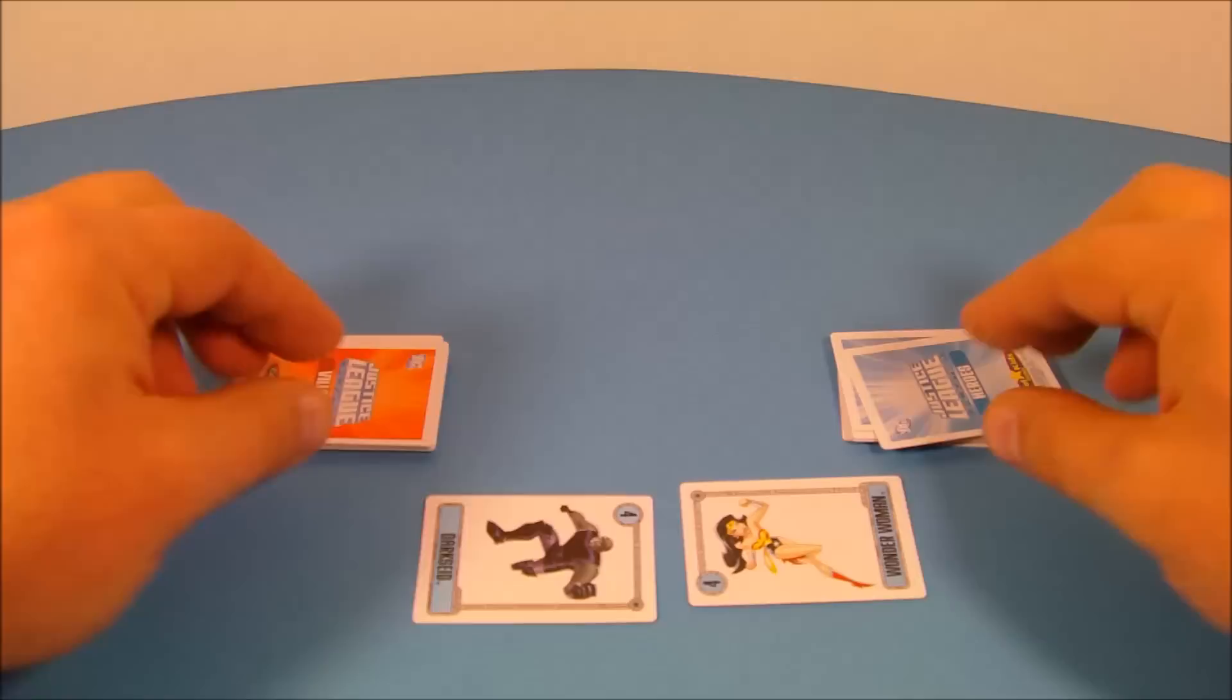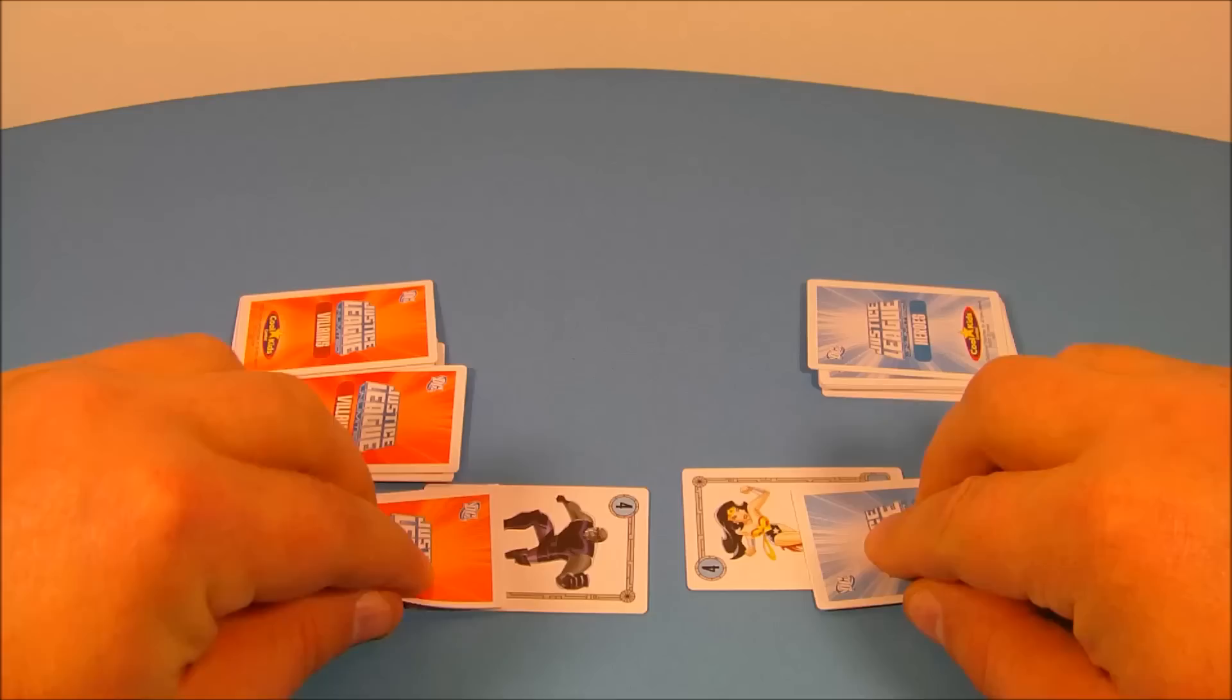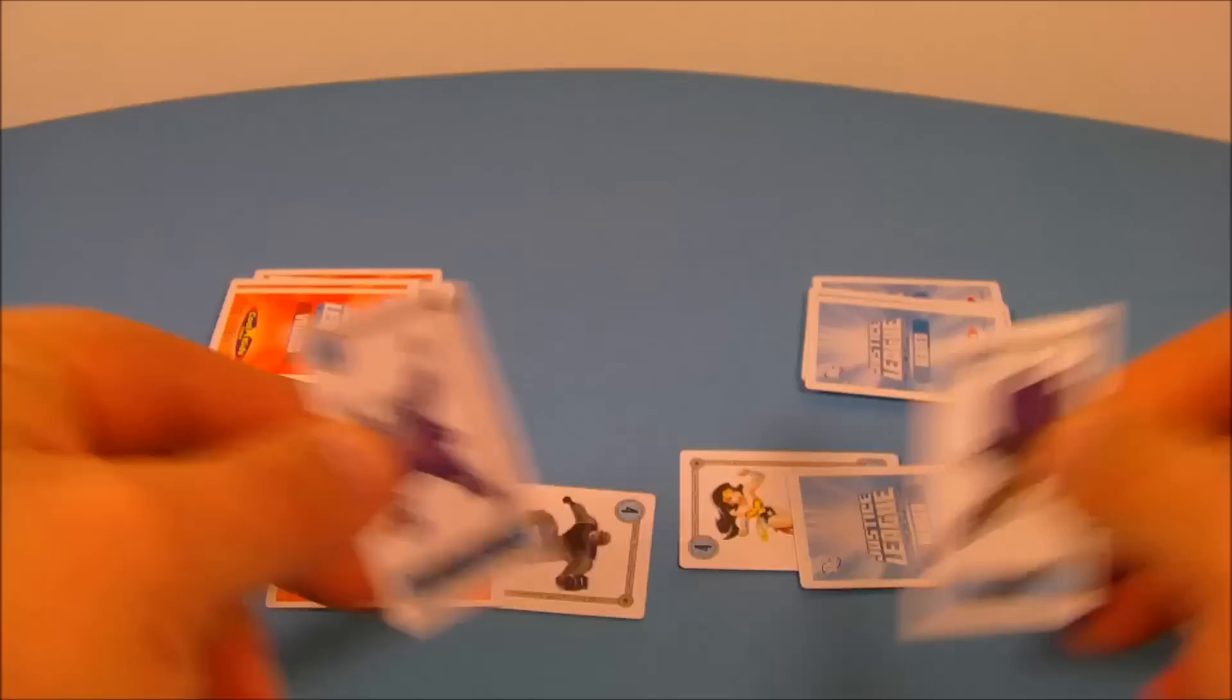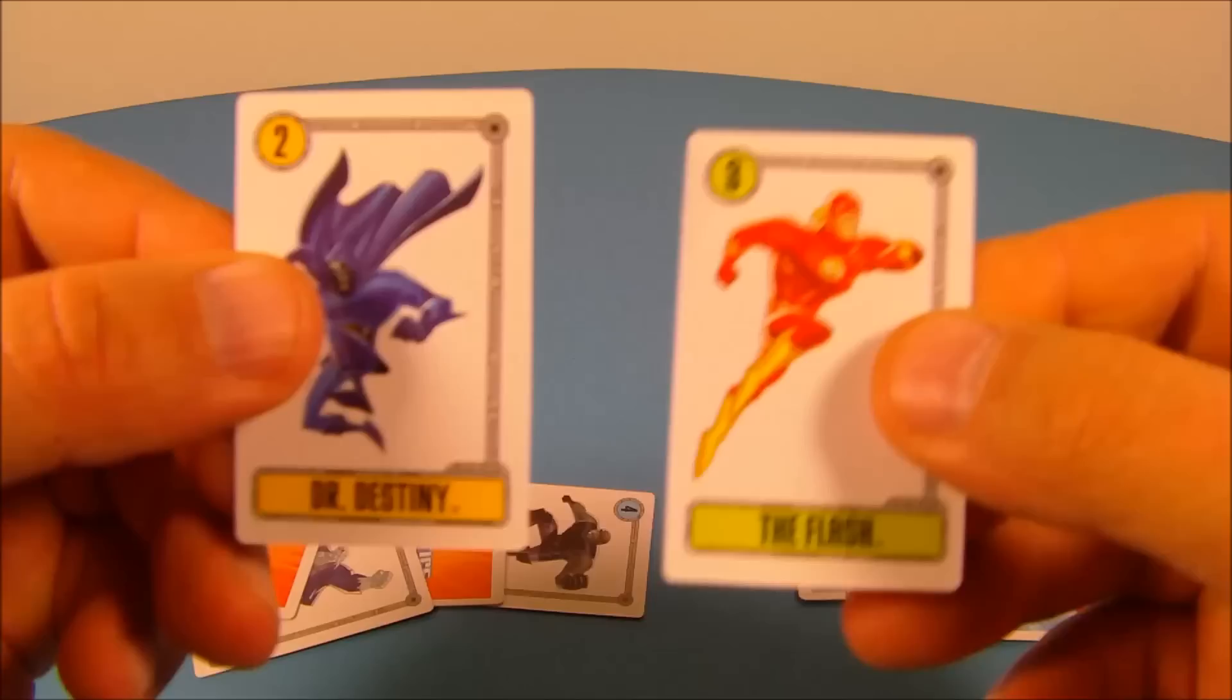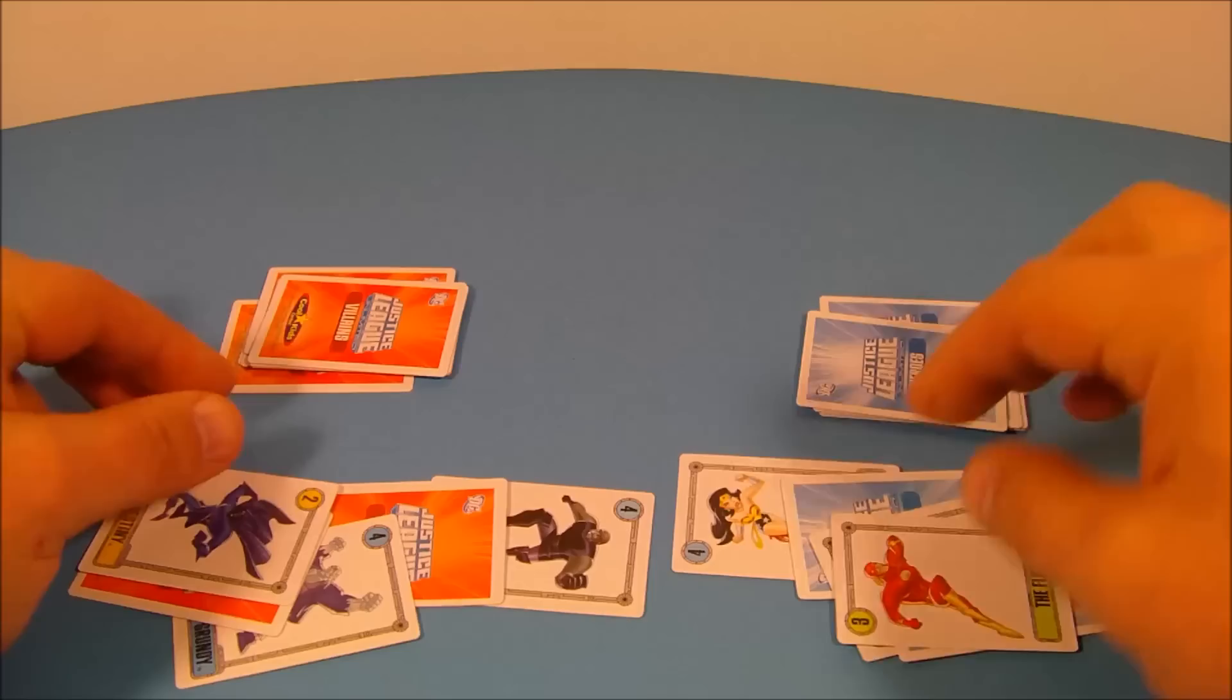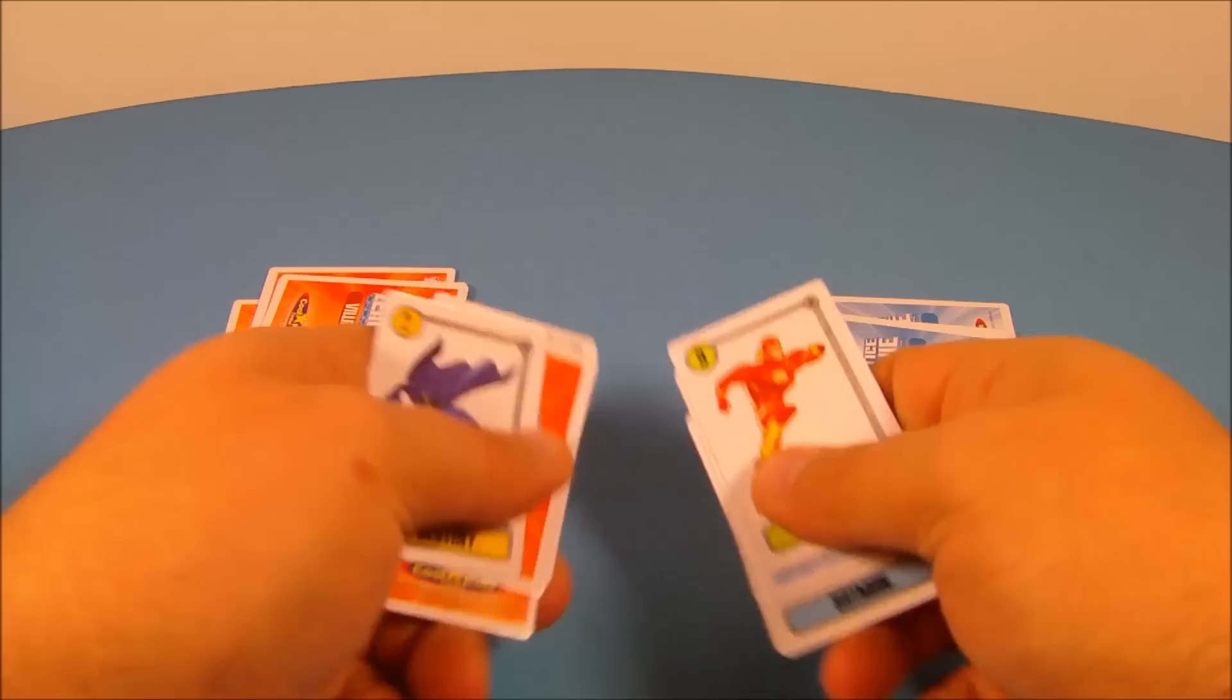So you take one card according to the instructions. You lay them down just like so, and then you flip the next card up. And then the winner gets all the cards. So the Flash has got the three and Dr. Destiny's number two. So the Flash, whoever has the heroes, wins. So you get all the cards, and the first person to collect all the cards and win every single battle wins the whole game.